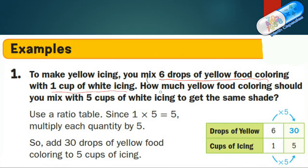The problem asks: how much yellow food coloring should you mix with five cups of white icing to get the same shade? We have five cups of white icing, so we put five in the table and the yellow drops are unknown. To go from one cup to five cups, we multiply by five. So we also multiply six drops by five to get 30. You should add 30 drops of yellow food coloring to five cups of icing.